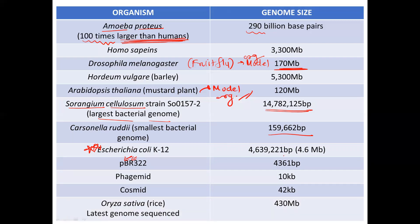Then Oryza sativa, that is rice. It was the latest genome to be sequenced, that is 430 MB. So that is from me for this video. Hopefully this is helpful to you. I'll see you in my next one. Bye.